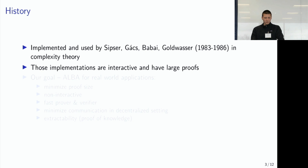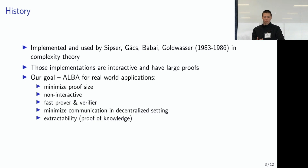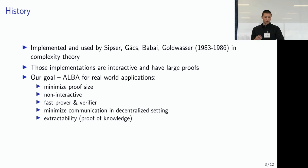We call this primitive Approximate Lower Bound Argument, or ALBA. This is a problem with a somewhat long history — throughout the 80s it was implemented and used by Sipser, Babai, and Goldwasser in complexity theory, but those implementations all had interaction and large proofs. Our goal is to construct an ALBA primitive for real-world applications, minimizing proof size with concrete numbers — not just asymptotics. We want non-interactivity, meaning the prover simultaneously convinces all present and future verifiers that he has enough elements.